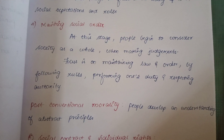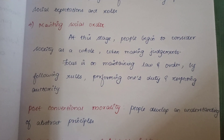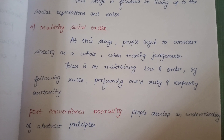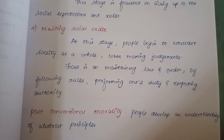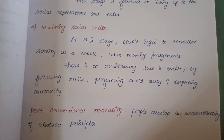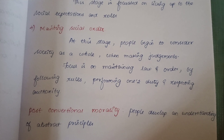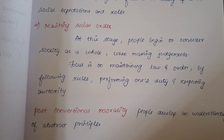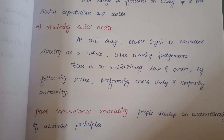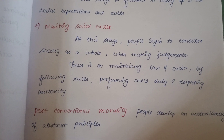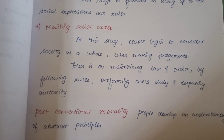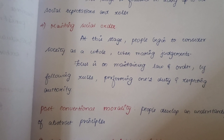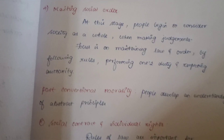The next stage under conventional morality is maintaining social order. In this stage, adults begin to treat society as a whole rather than as individuals. Key roles are played by law and order — it is necessary to obey the law, perform our duties duly, and give proper respect to higher authorities.